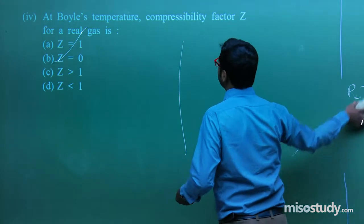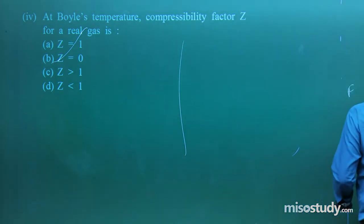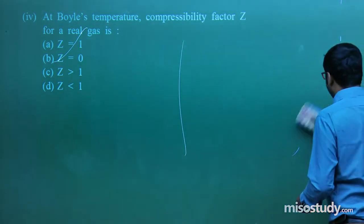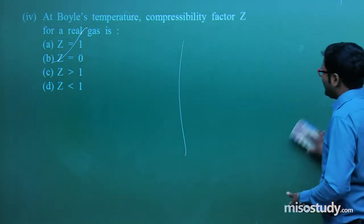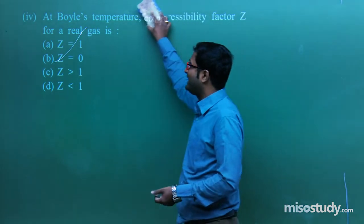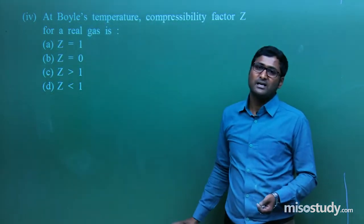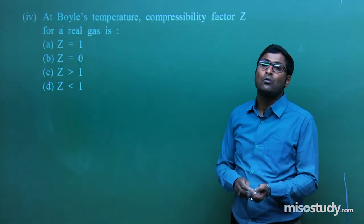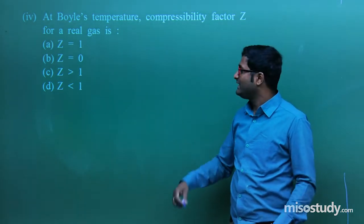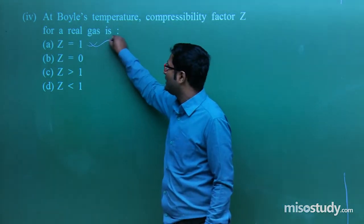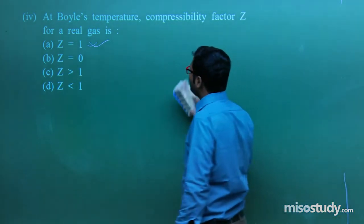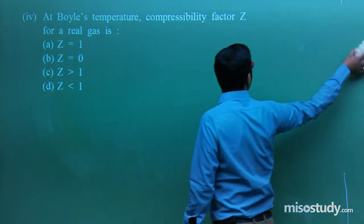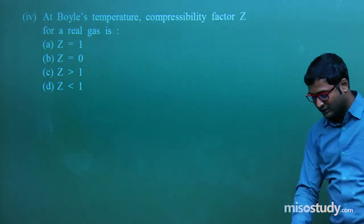At Boyle temperature, real gas behaves as an ideal gas. If real gas behaves as ideal gas, then Z = 1. So the option is Z equal to 1. Now let us move to the next question.